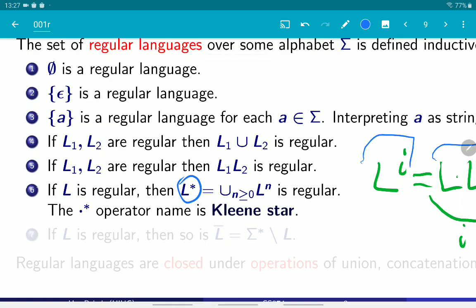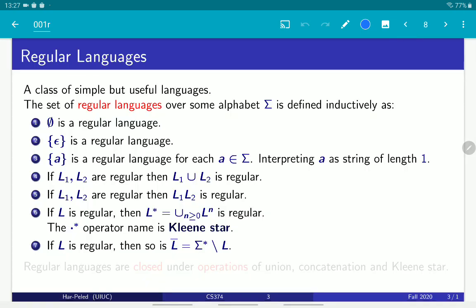As I mentioned, this star operator is called the Kleene star and we will use it a lot. And another important thing is that if L is regular, then the complement language is regular.